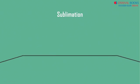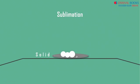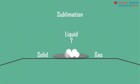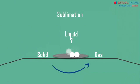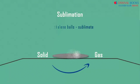For example, the naphthalene balls used in our houses disappear within a few days. We do not see them get converted into the liquid state. These naphthalene balls move directly from the solid state to the gaseous state. Therefore, we say that naphthalene balls sublimate.